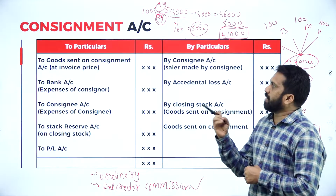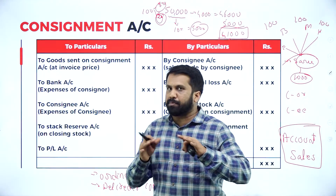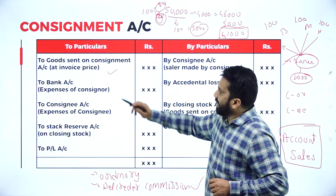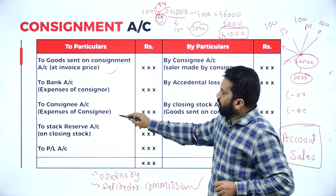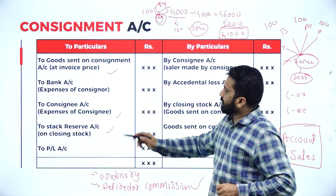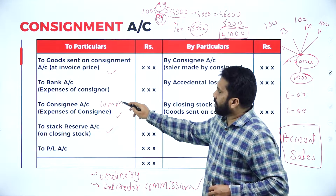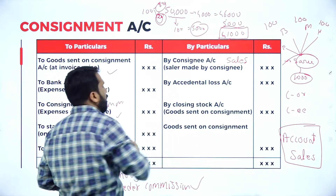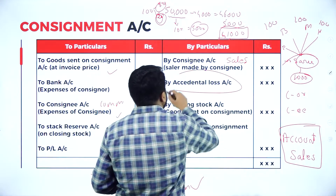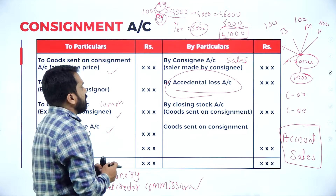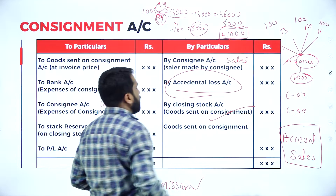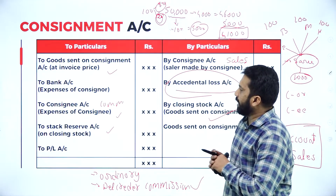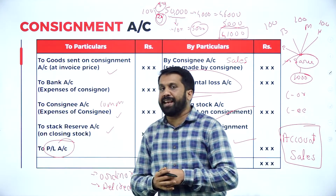Now, you are supposed to prepare the consignment account. On the debit side: goods sent on consignment — how much goods given by owner to agent; bank account — all expenses made by owner; consignee — all expenses made by agent; closing stock reserve including commission. On the credit side: consignee's sales, any accidental losses, any closing stock unsold.